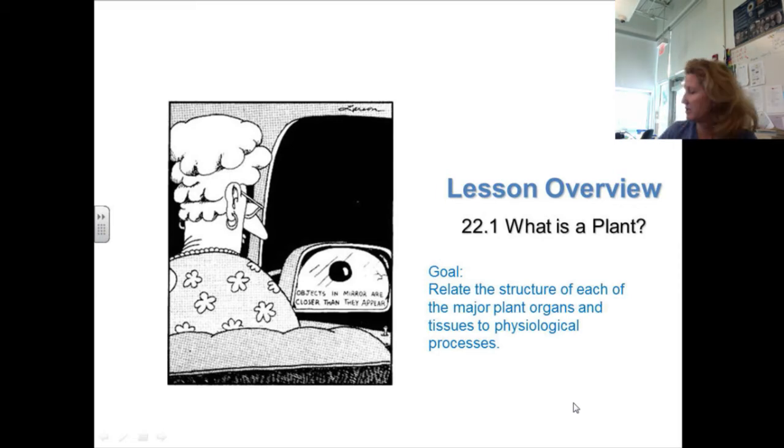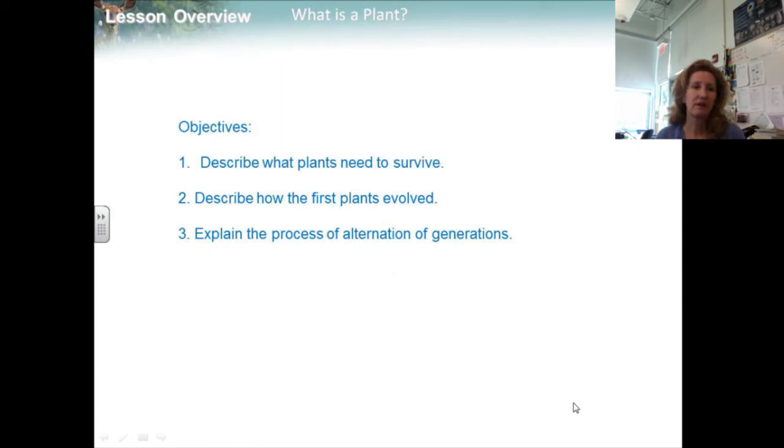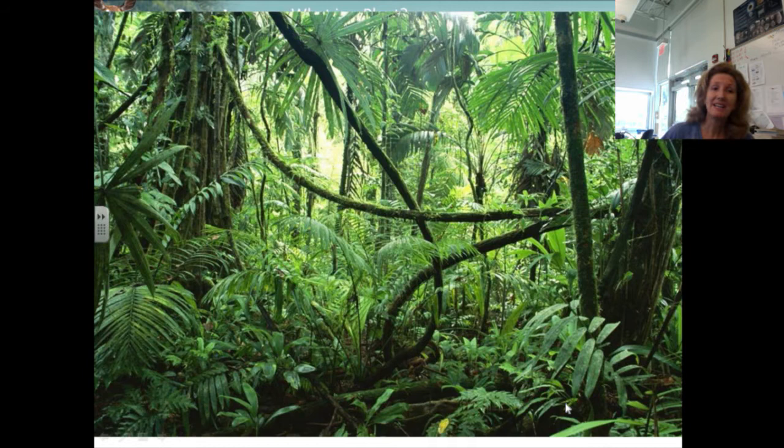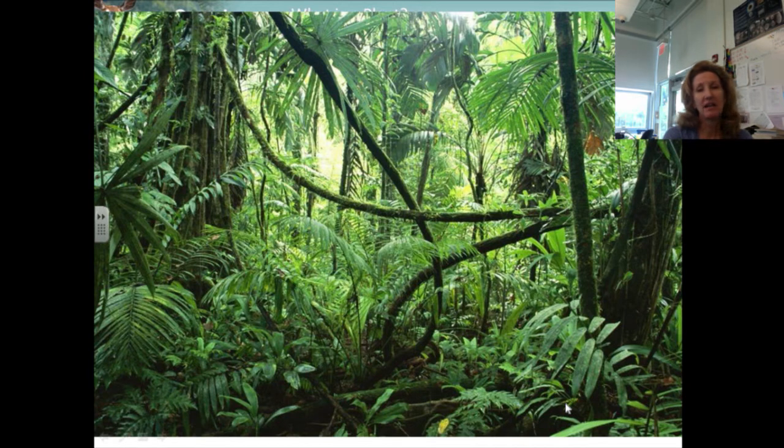So, our objectives are to describe what plants need to survive, describe how the first plants evolved, and also explain the process of alternations of generations. Plants have adapted so well to so many environments that they dominate much of the surface of our planet, and there is strong evidence that all modern plants are descendants of water-dwelling organisms. The appearance of plants on land was a major event in evolution.